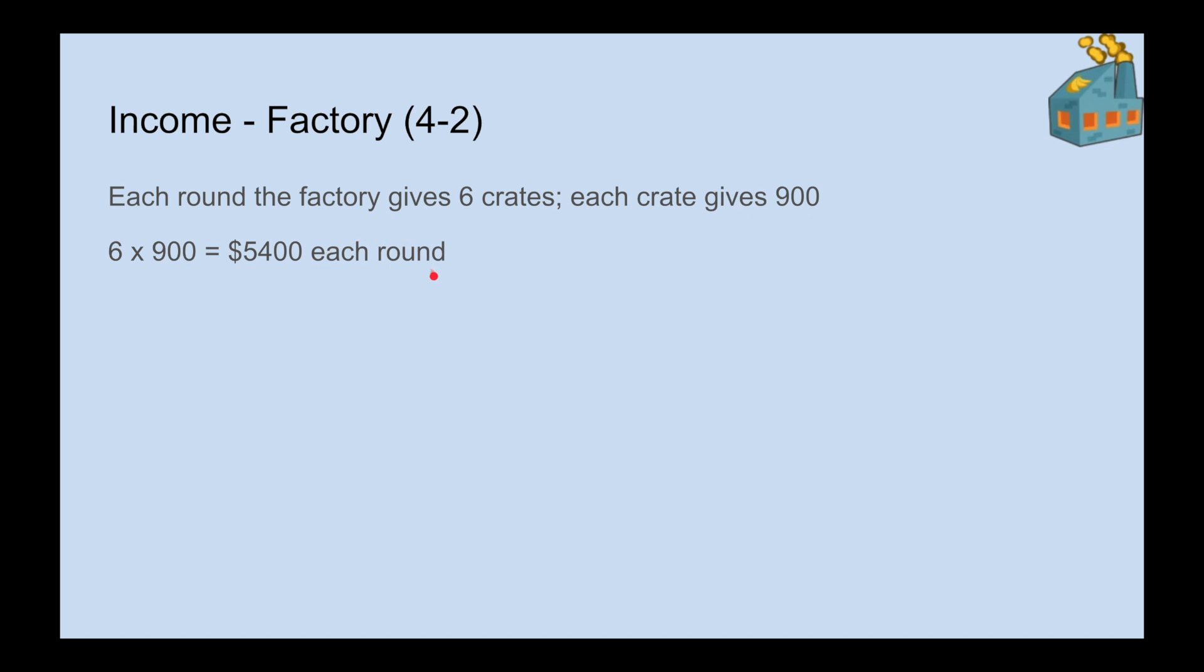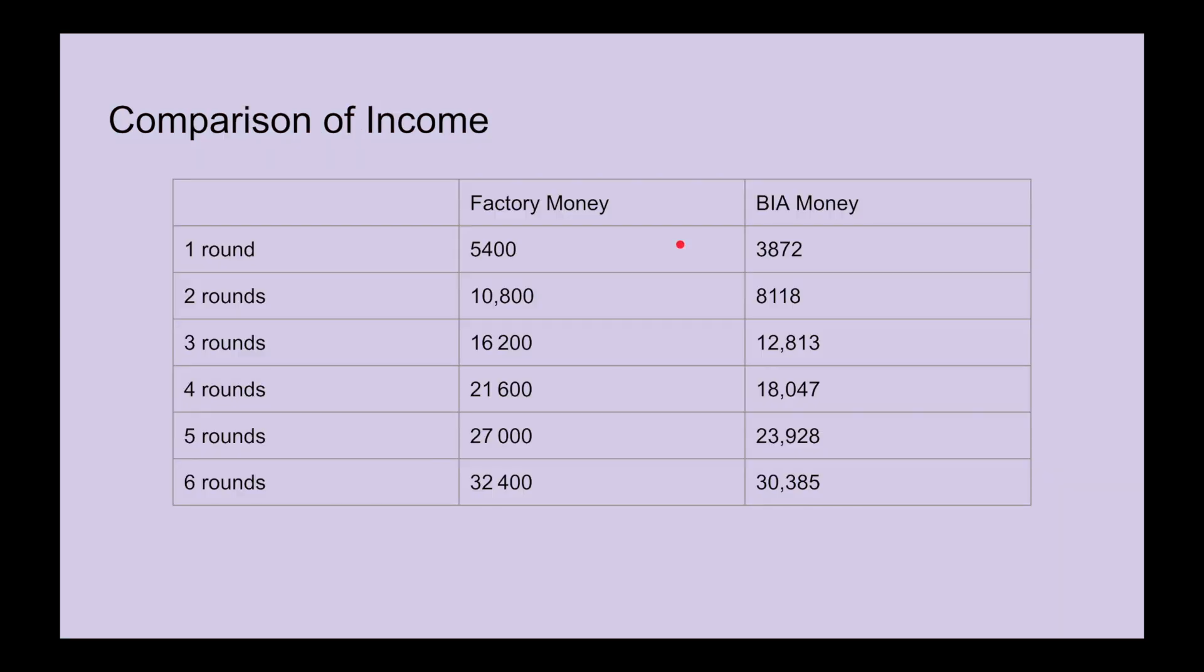Let's look at a comparison of income, then compare profits. After one round, the factory gives you $5400, and as you can see, the factory is still going to be giving you more money until you have to collect the BIA, in which the BIA profits reset and the factory money you can spend on whatever you want.